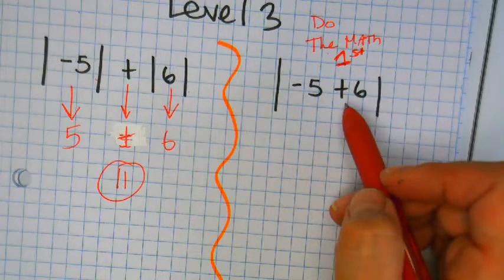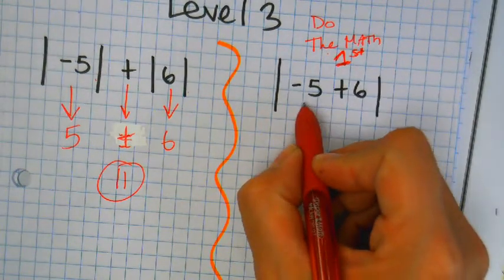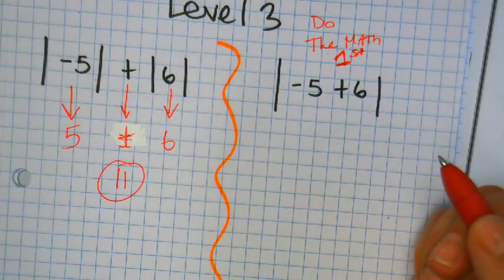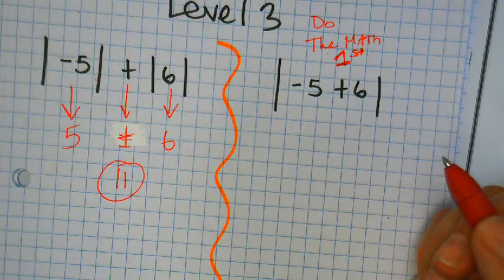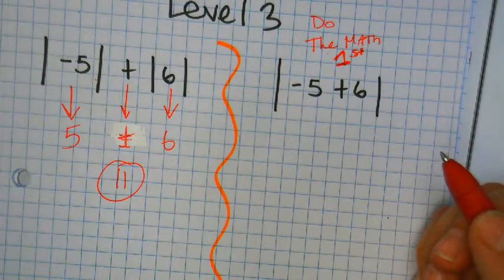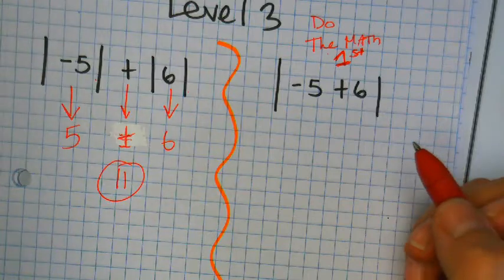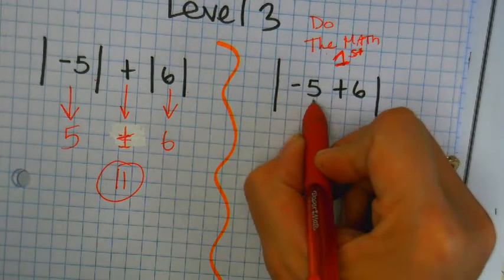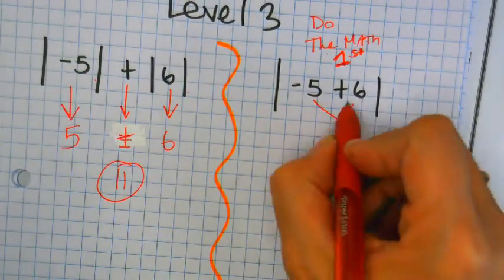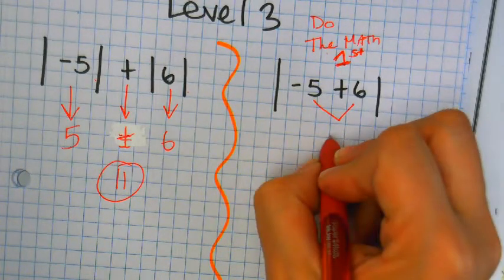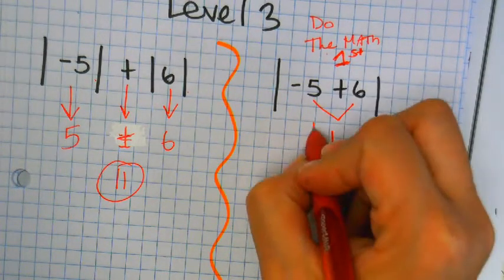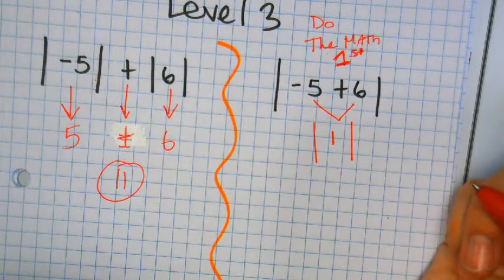So, let's do the math first. What's negative five plus six? Negative one. Negative one. This, negative five plus six, is equal to one inside the bars. So you do the math first.